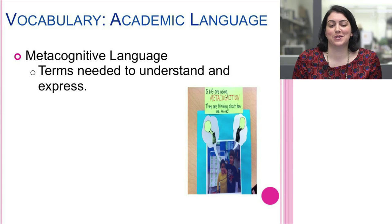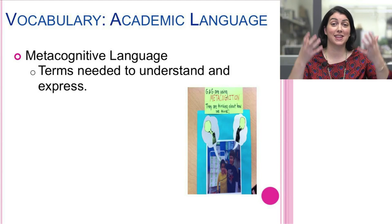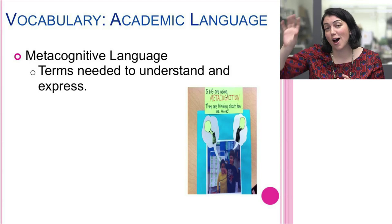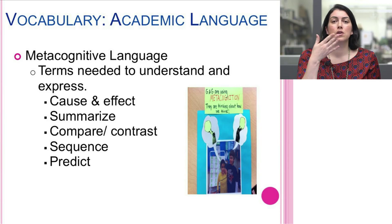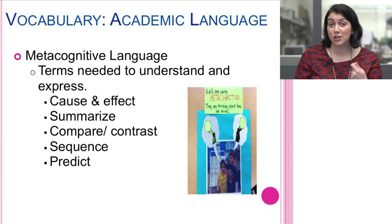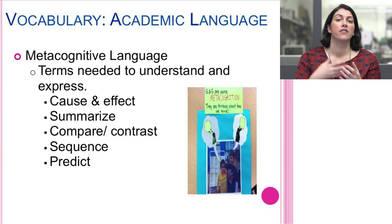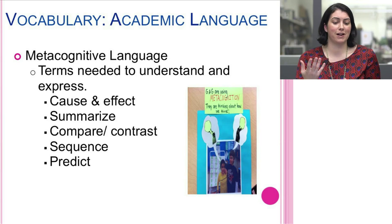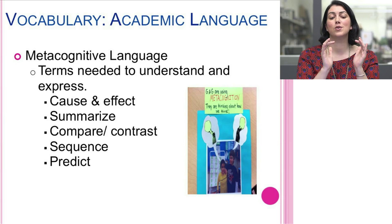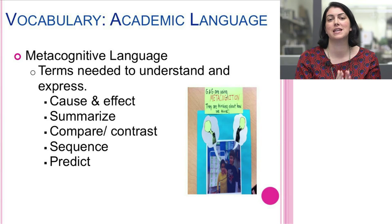I use a visual with my students when talking about metacognitive language, so they understand how important it is to think about what you're thinking — thought bubbles appearing within thought bubbles — making it accessible to fourth graders. Help them know those terms they'll encounter so that words like 'cause and effect,' 'summarize,' 'compare and contrast,' 'sequence,' or 'predict' are not barriers to demonstrating what they know.